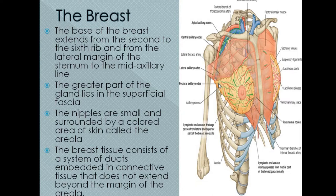A small part of the breast tissue pierces the deep fascia of the anterior chest wall and lies in the deep fascia — this is called the axillary tail, which will be discussed later. The greater part of the breast is in the superficial fascia of the anterior thoracic region. The nipples are small rounded areas surrounded by a dark pigmented area called the areola. The nipple is where all the lactiferous ducts open up through the sinus, providing the opening of the ducts to the exterior.